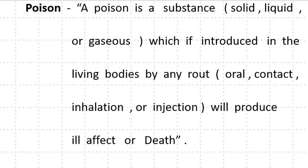What is poison? Poison is a substance which, if introduced in the living body by any route, will produce ill effect or death. The substance may be solid, liquid or gaseous, and the route may be oral route, contact, inhalation or by injection.